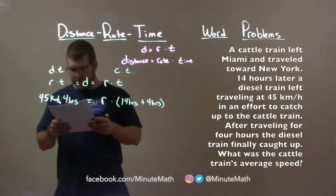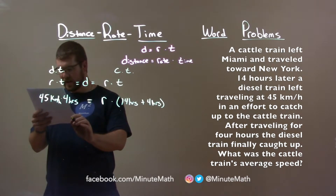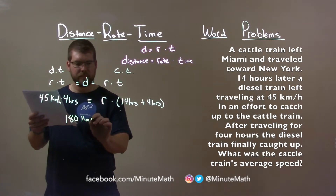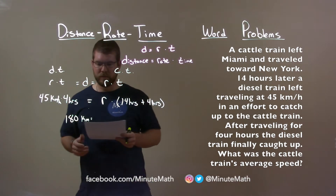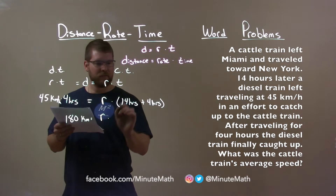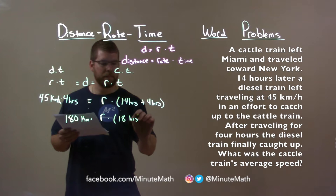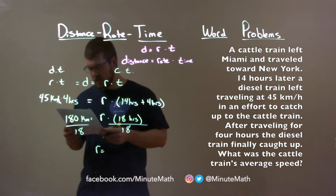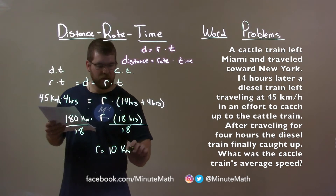So four hours times 45 kilometers per hour is 180 kilometers — that's the distance it traveled. And here we have R times 14 plus 4, which is 18 hours. We solve for R, so we divide both sides by 18. Rearranging, having R come first: 180 divided by 18 is 10, and that's 10 kilometers per hour.